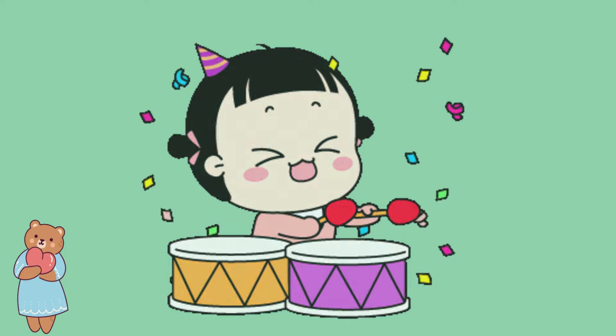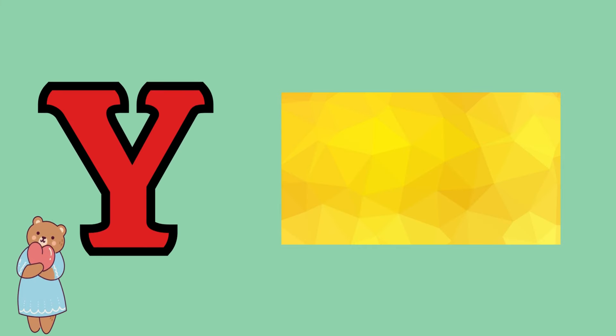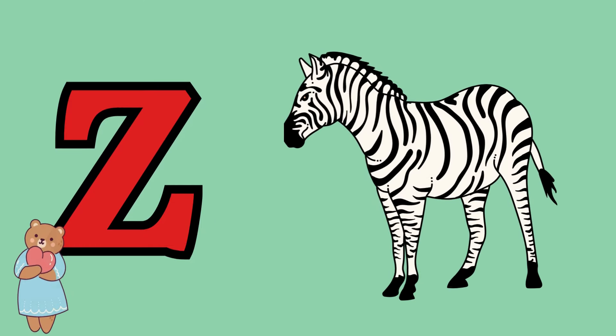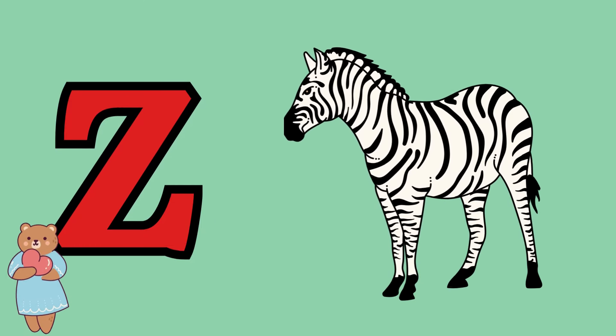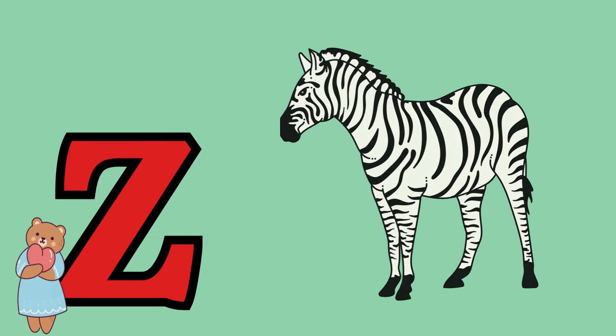Y is for yellow, y-y-yellow. Z is for zebra, z-z-zebra.